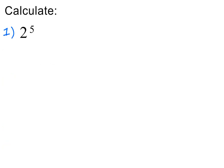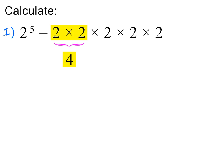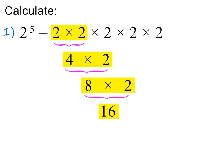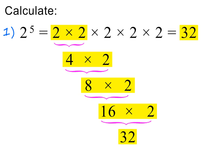You can also be asked to calculate powers. To help us with the calculation, we expand the power. We are now ready to calculate: 2 times 2 equals 4, 4 times 2 equals 8, 8 times 2 equals 16, and 16 times 2 equals 32. So the value of 2 to the power of 5 is 32.